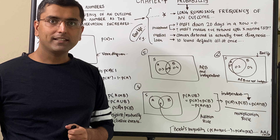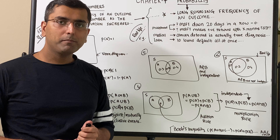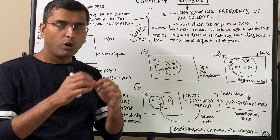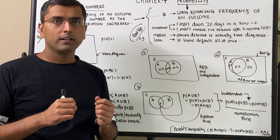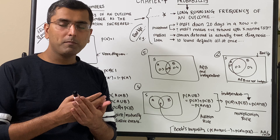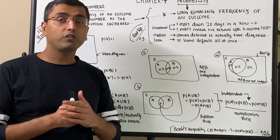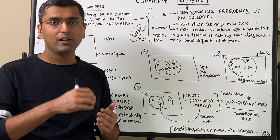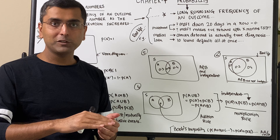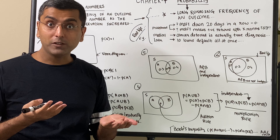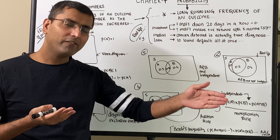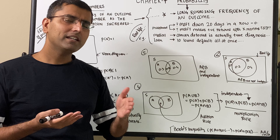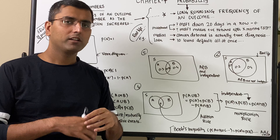Chapter 7: Probability. Probability is nothing but a long-running frequency or the count of any given outcome. For example, if you want to find out what is the probability that Microsoft stock will turn red tomorrow — meaning it will open and close negative — you can look at historical data and find out at every single point what is the probability that a given day Microsoft becomes negative.